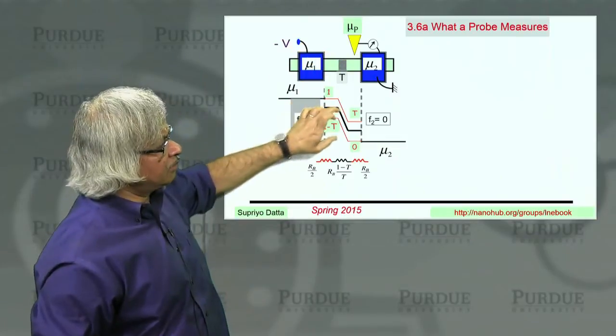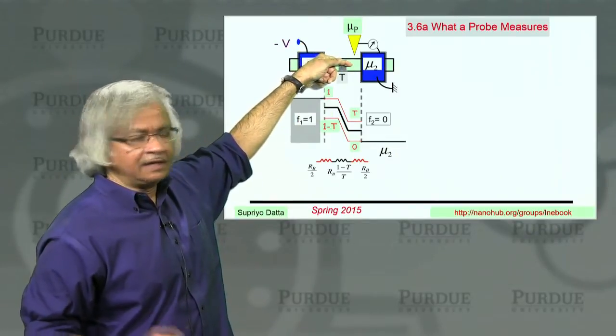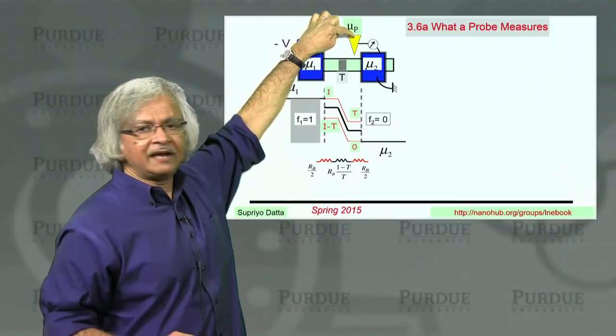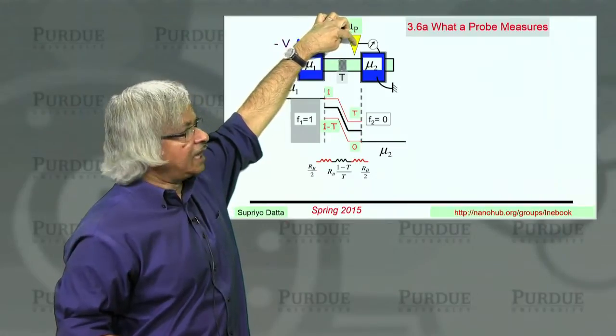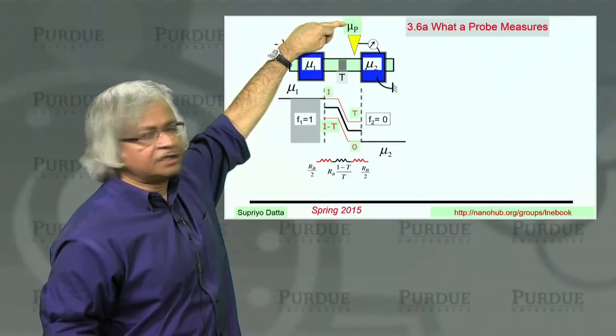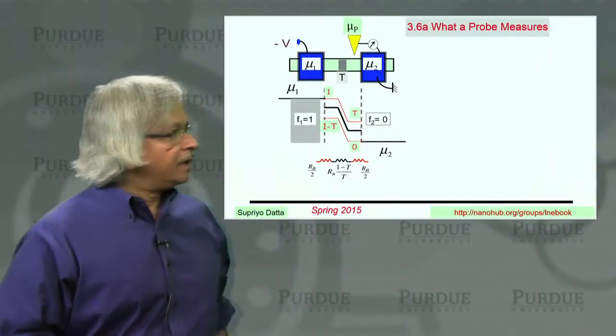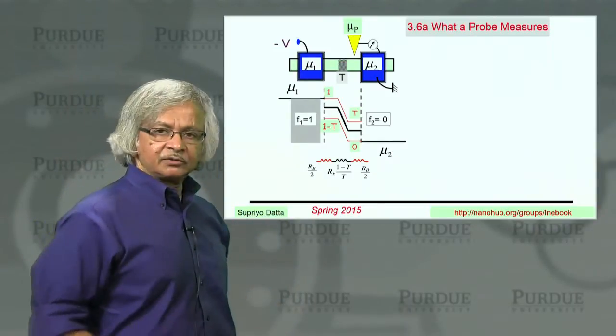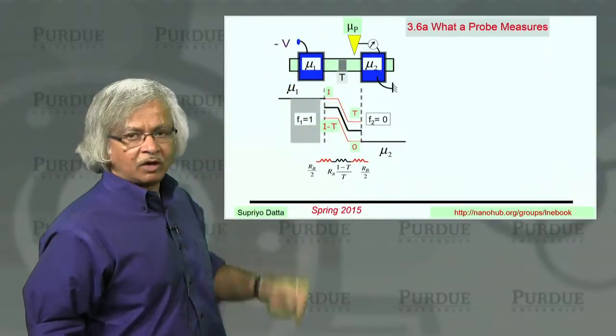So they say, let's not talk about what the quasi-Fermi level is inside that channel. Instead, let's say we put a little scanning probe up here. You see, like a scanning tunneling probe. And ask the question, what potential would that probe float to? Now, how would you answer that question? Well, how is this probe potential related to the quasi-Fermi levels?